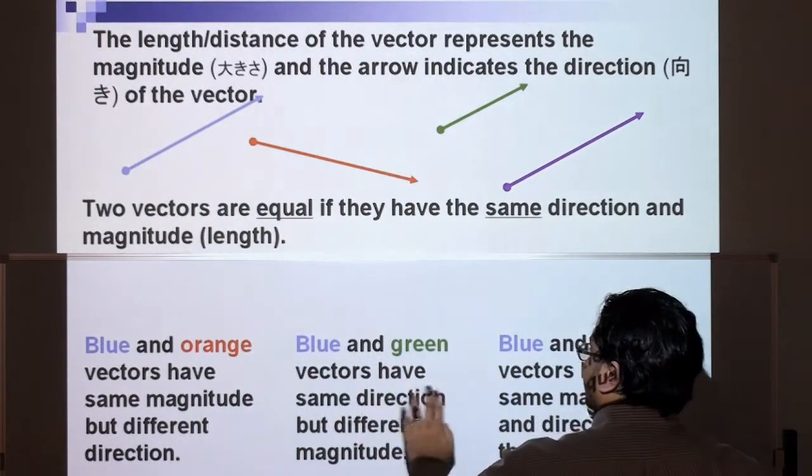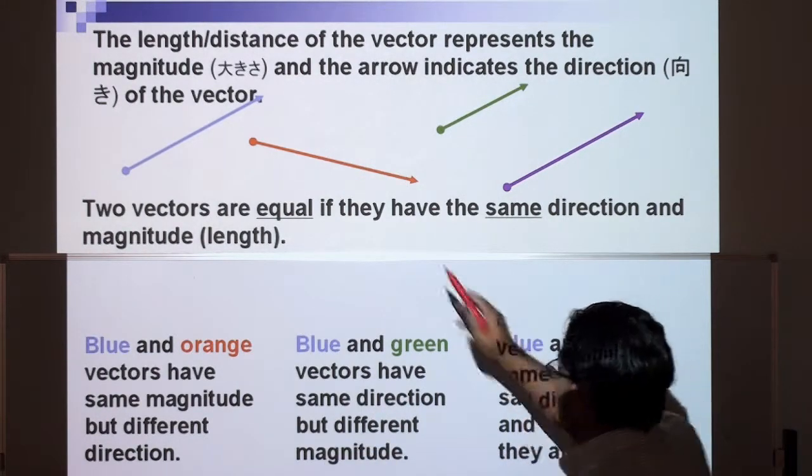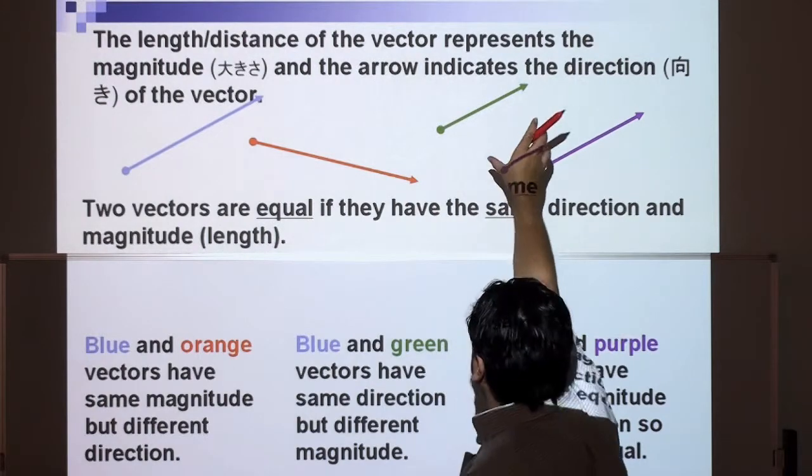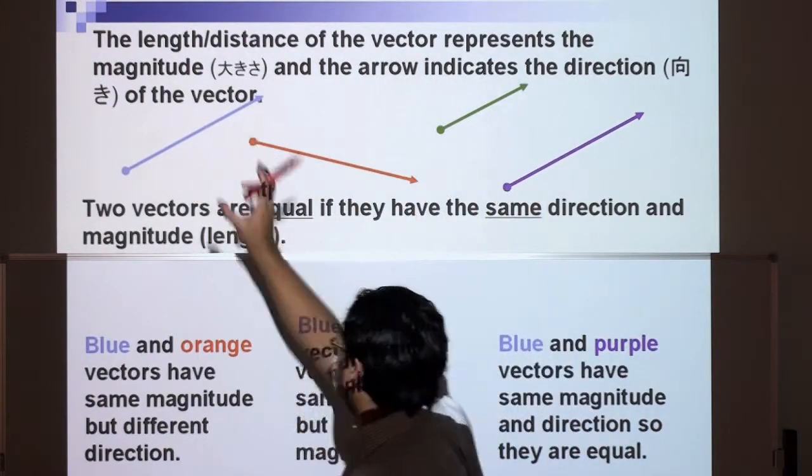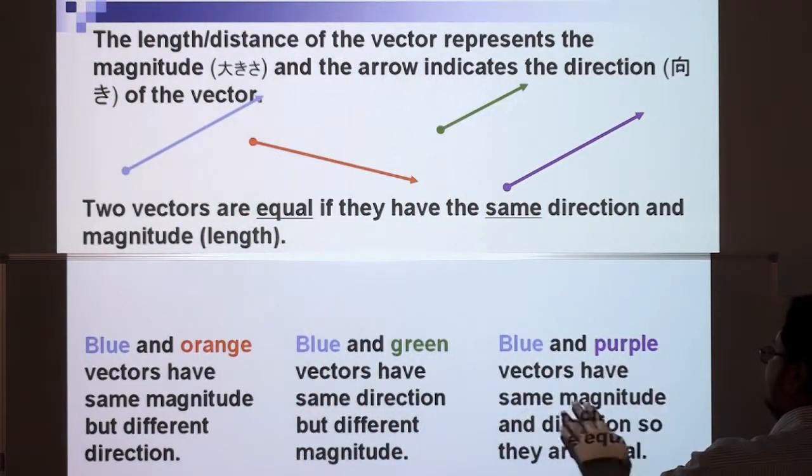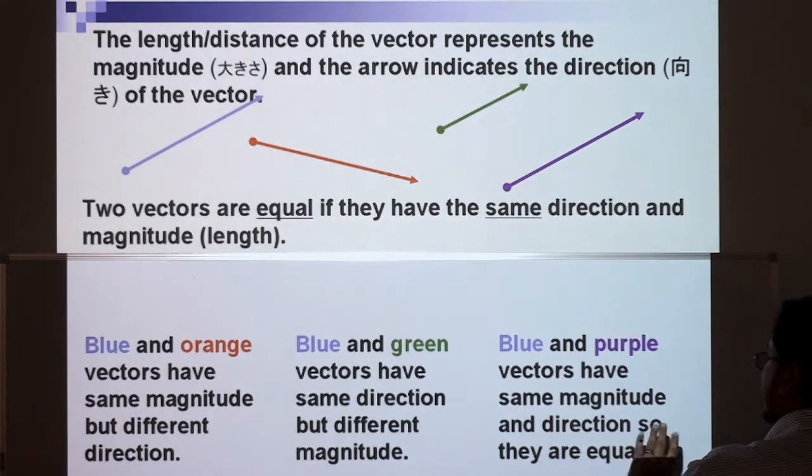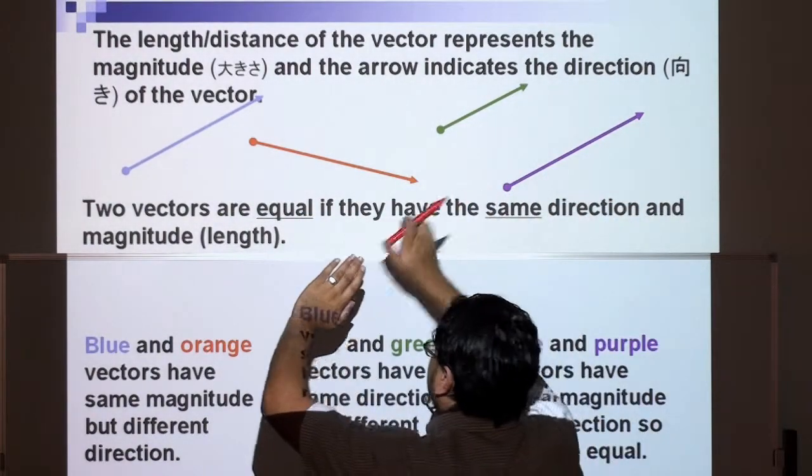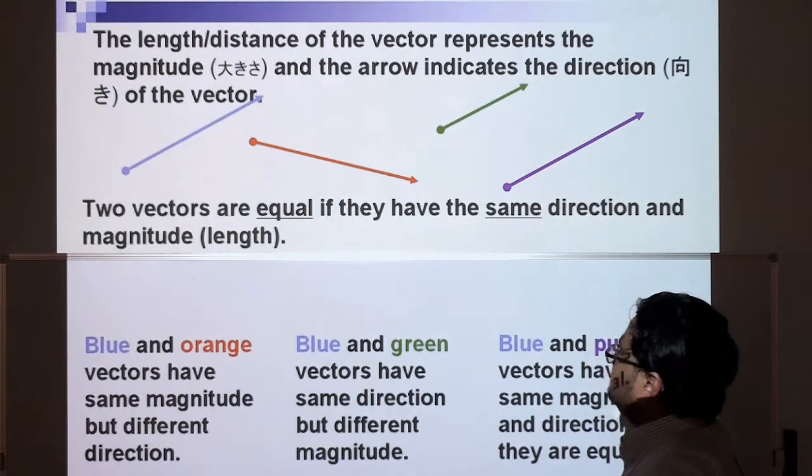Blue and green vectors have the same direction but different magnitude. So the blue and the green arrow are pointing in the same direction, but this one is shorter than that one. Blue and purple vectors have the same magnitude and direction, so they are equal. Blue and purple are exactly the same in length and in direction, both pointing that way.